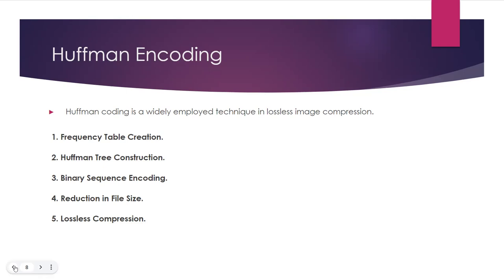Huffman coding ensures lossless compression, meaning the original image data can be perfectly reconstructed during decompression. The Huffman-coded binary sequence is decoded to faithfully retrieve the initial pixel values of the image. Now let's look at some results obtained through Huffman encoding.